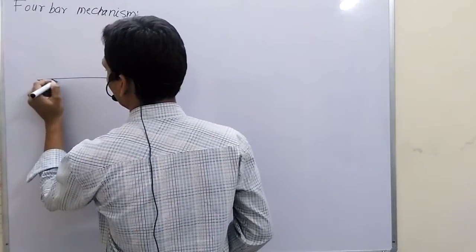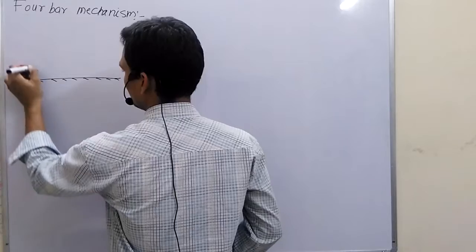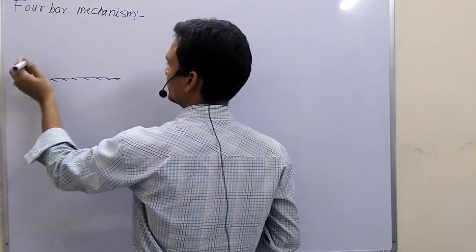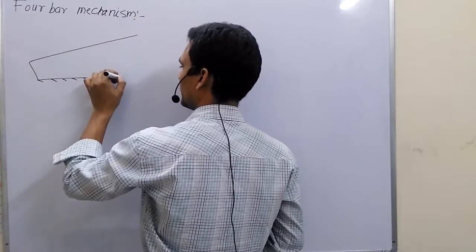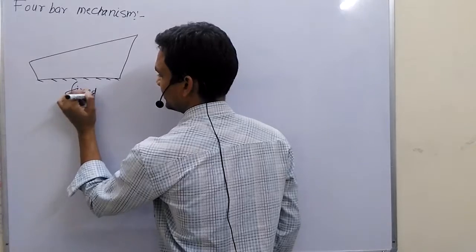Let me first draw. This is the fixed link. Adjacent to fix. Coupler. Output link. Suppose this is the fixed link.